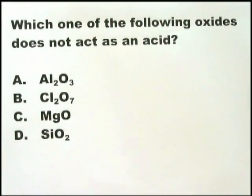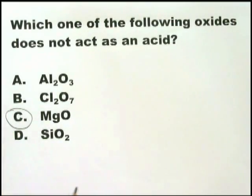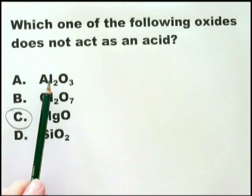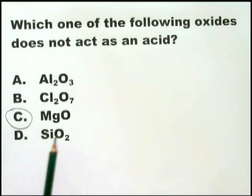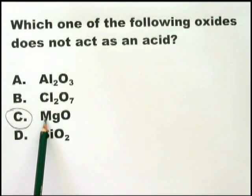This is the same question, except it's phrased slightly differently. Which one does not act as an acid? Well, the one that does not act as an acid must be the one that is either a base or alkaline in solution, and that is only MgO. Interestingly, they do put Al2O3, that is amphoteric, which can act both as a base and as an acid. But the only one that does not act as an acid is magnesium oxide.